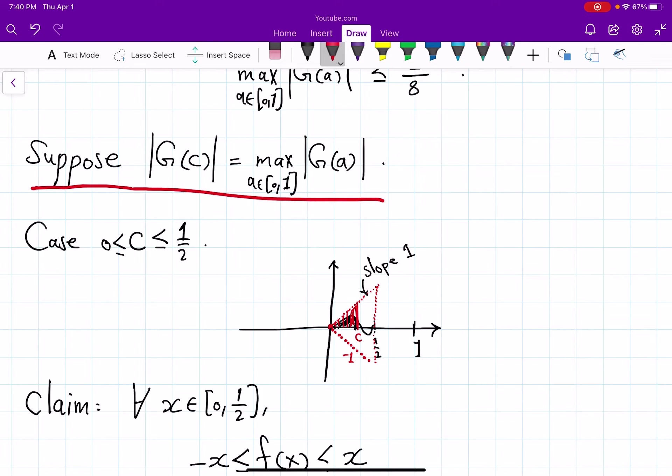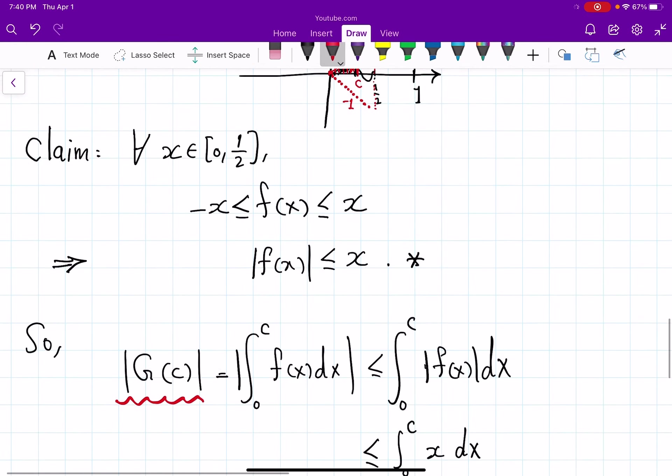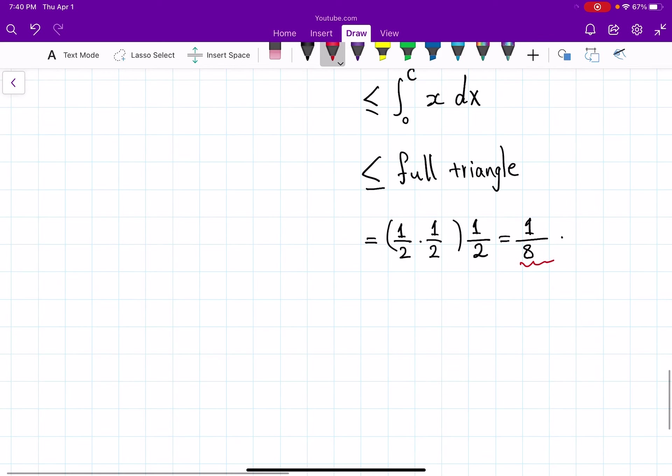So in this case I managed to show that g(c), which is the maximum possible for g(a), is less than one eighth, and that is exactly what we wanted to show. That was our goal up here. Okay, but we did this under the assumption that the maximum occurred before one half. So what happens if the maximum occurs later, that means to the right of one half.